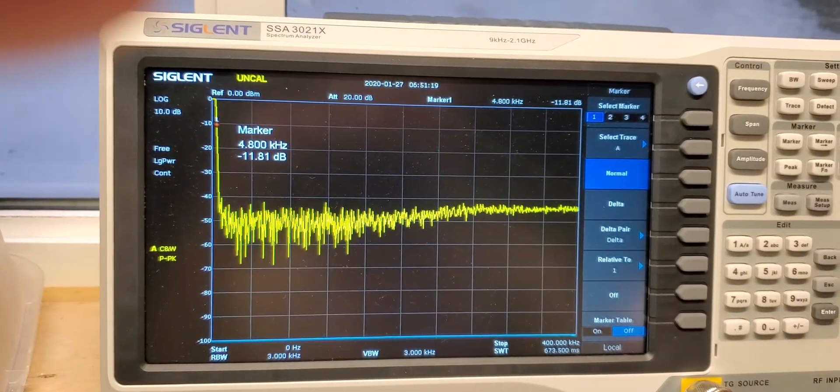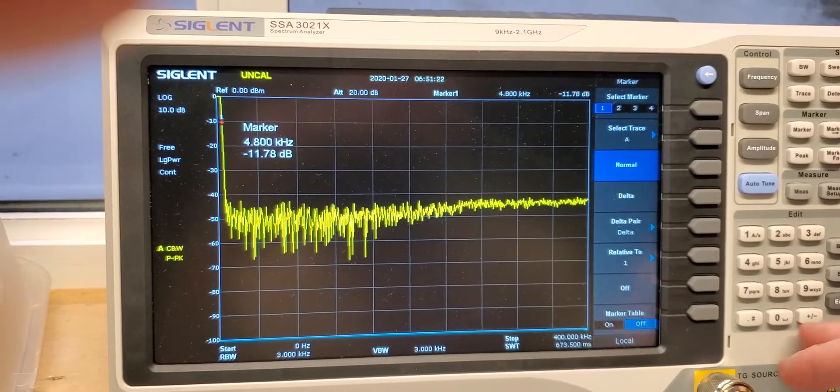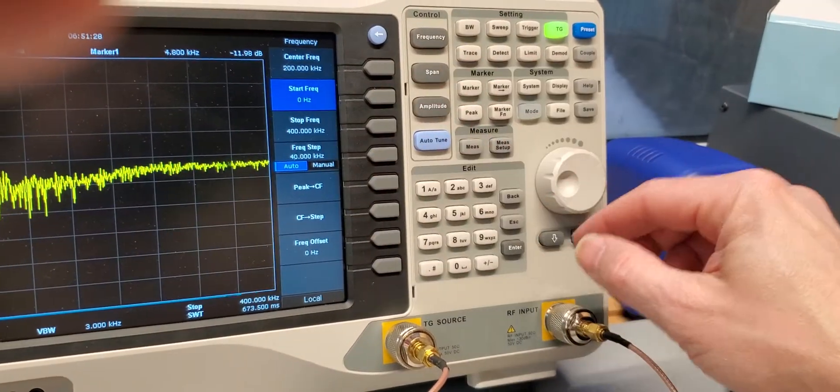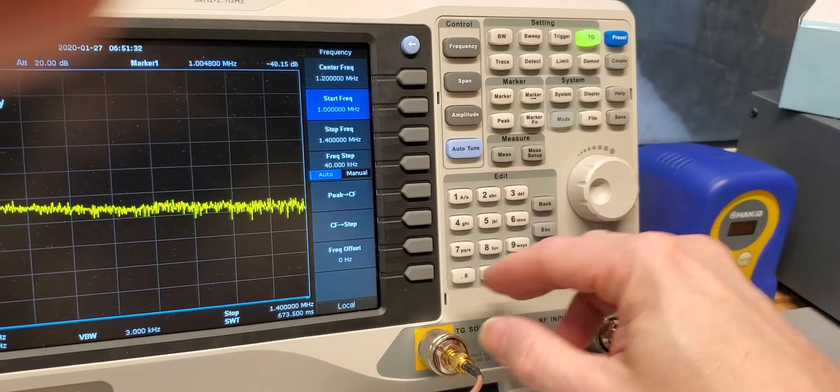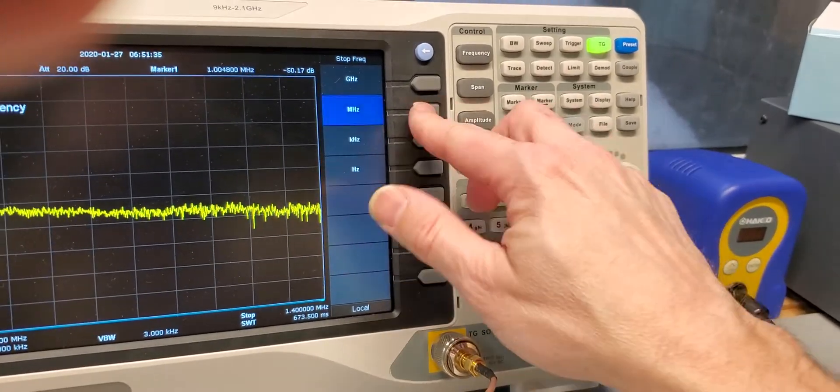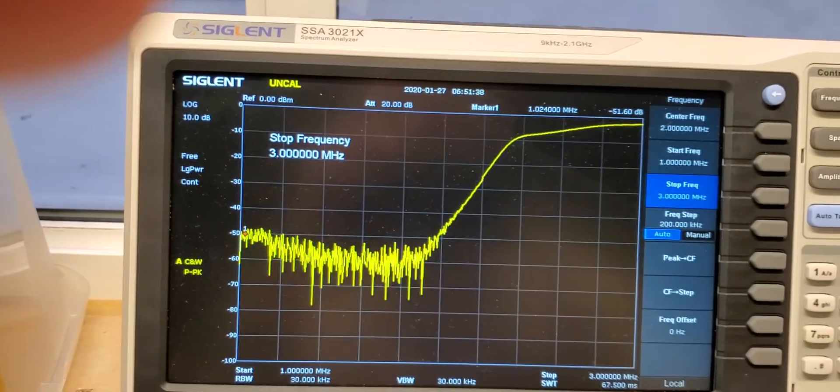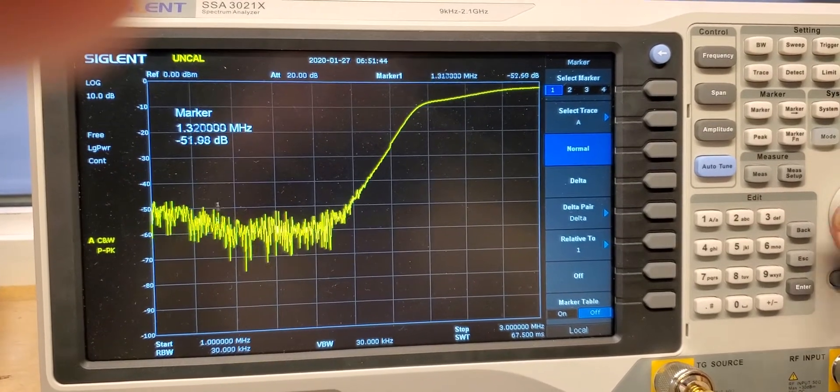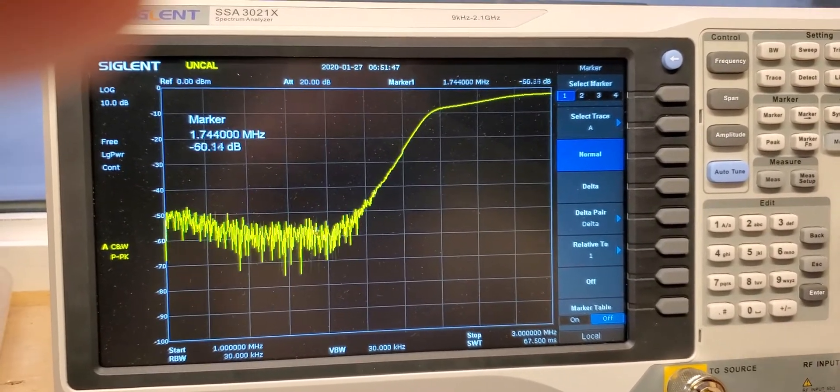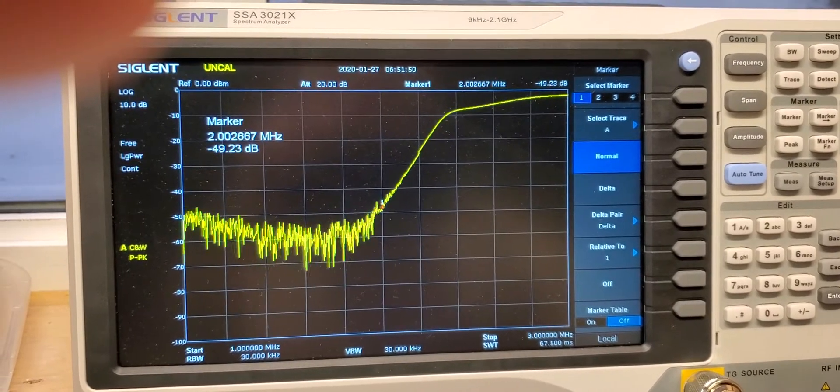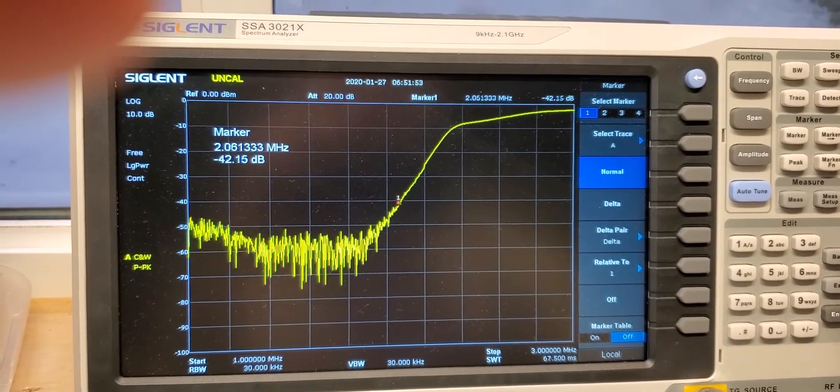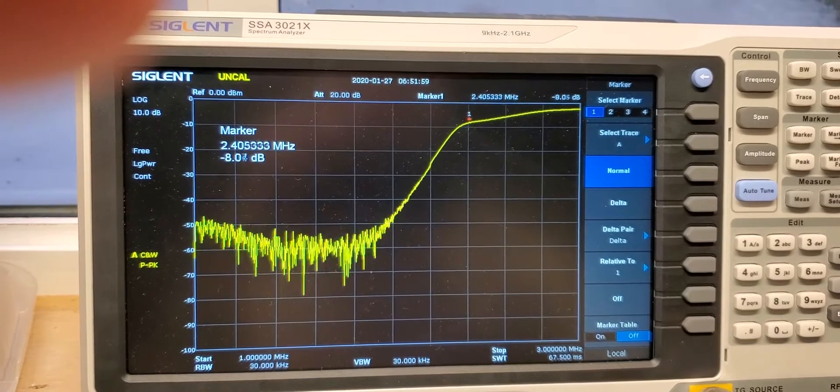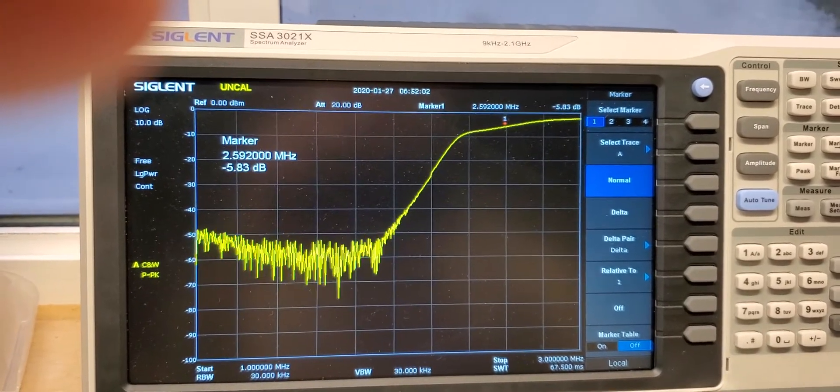So if you want to zoom in at 2.6 megahertz, we can go ahead and do that. Let's type in the start frequency at 1 megahertz and the stop frequency at 3 megahertz. And right here we should see the curve. So right at 2 megahertz is when we start going up, and once we are definitely by 2.4 we are in a pretty decent range already where the signal is being passed through.